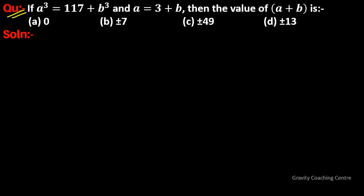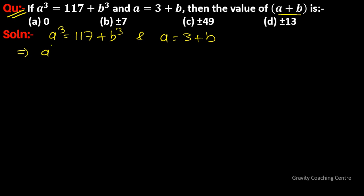Question: if a³ equal to 117 plus b³ and a equal to 3 plus b, then find the value of a plus b. Given a³ equal to 117 plus b³, and a equal to 3 plus b, so a³ minus b³ equal to 117.